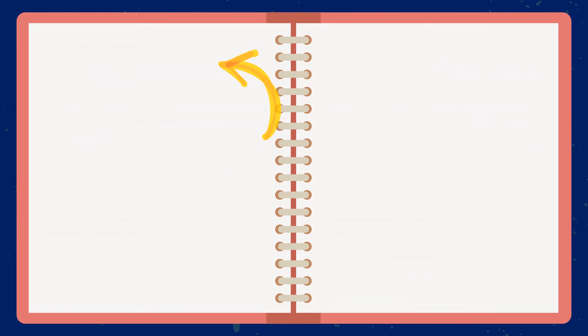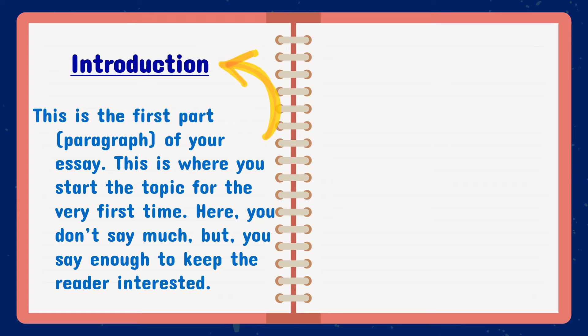Now let's break the three main parts into details to get a clearer understanding. The introduction is simply the first part or paragraph of your essay. This is where you start the topic for the first time. Here, you don't say much, but you say enough to keep the reader interested. You have to always concentrate on making your introduction very interesting. The introduction is the main road or gate that opens your whole story. If the introduction is boring, no one will want to read on — so keep it short but very interesting.